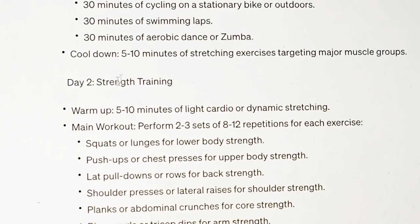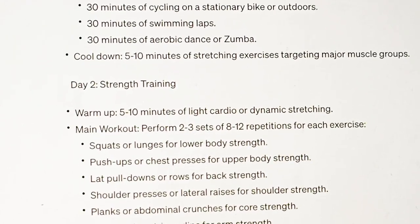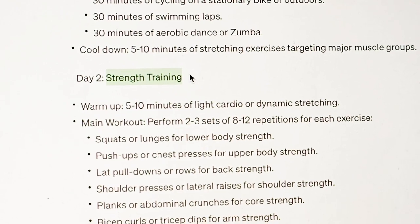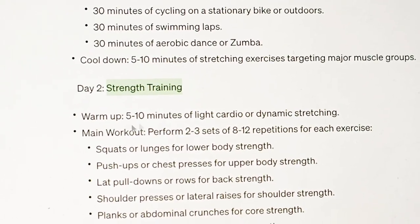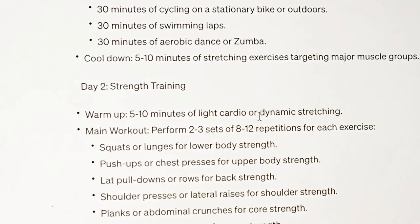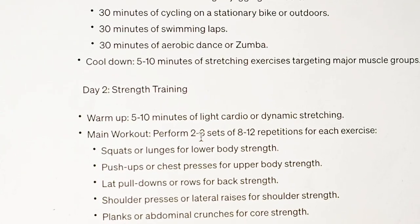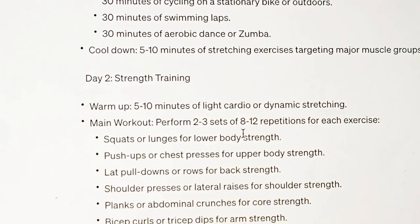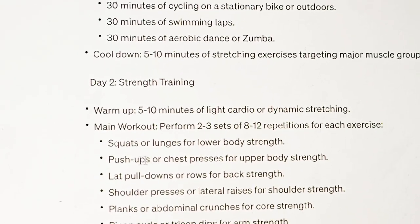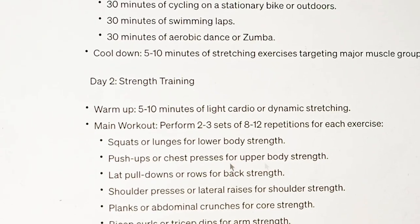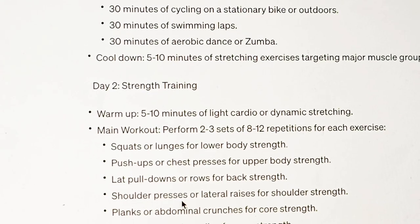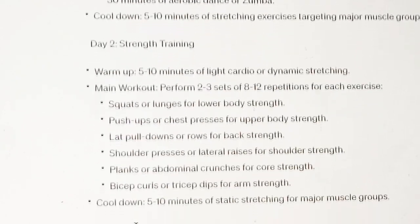Day two is strength training — no cardio here. The same warm-up: five to ten minutes of light cardio or dynamic stretching. For the main workout, perform two to three sets of eight to twelve repetitions for each exercise. You can do squats or lunges for lower body strength, push-ups or chest presses for upper body strength, lat pull-downs or rows for back strength, and also shoulder presses, planks, and bicep curls. Then cool down five to ten minutes. As you can see, you really don't need a personal trainer — you already have one at ChatGPT.